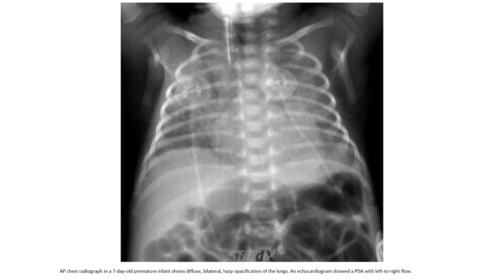A radiograph in a seven-day-old premature infant showing hazy opacity of the lungs, and a program showed PDA with left-to-right shunting.